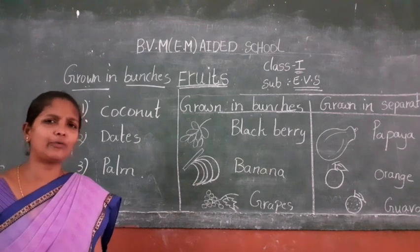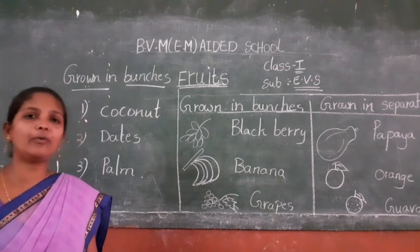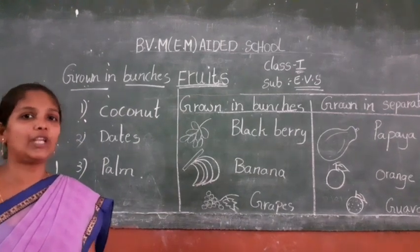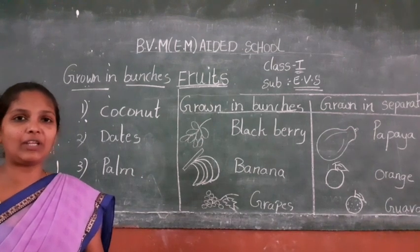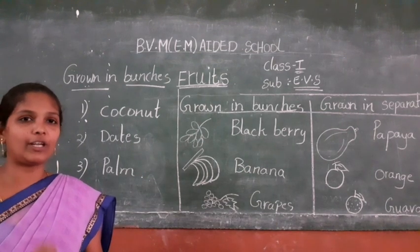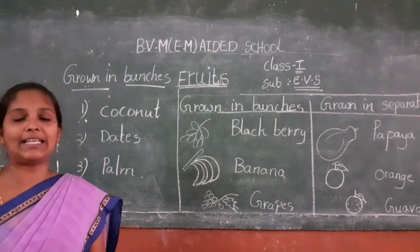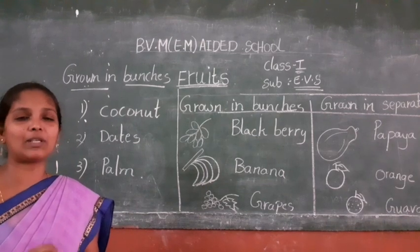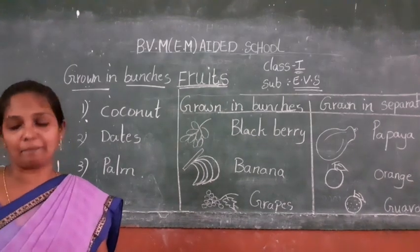Next, how to eat fruits children. How to eat - first of all, before eating fruits, clean them with water. Okay, after that we will cut the fruits and eat them. Some fruits we cut and eat, some fruits we peel and eat.